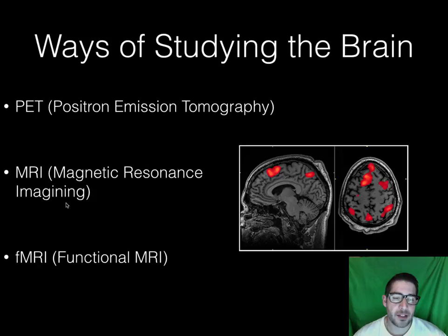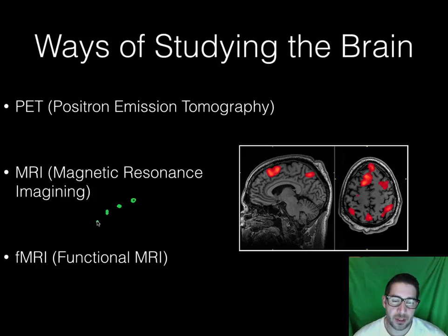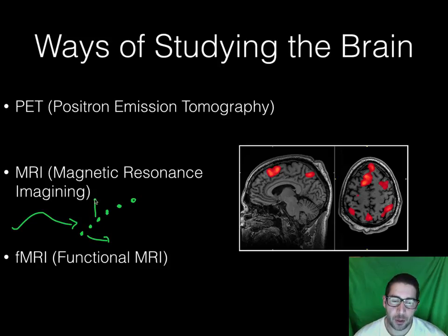The last two both have MRI in the name — magnetic resonance imaging. You have these little atoms in your brain spinning around in all directions. What magnetic resonance imaging does is make all these little atoms line up, then sends a signal that disorients them. When those atoms go back to where they were and how they were moving, it tells us what part of your brain was being activated.